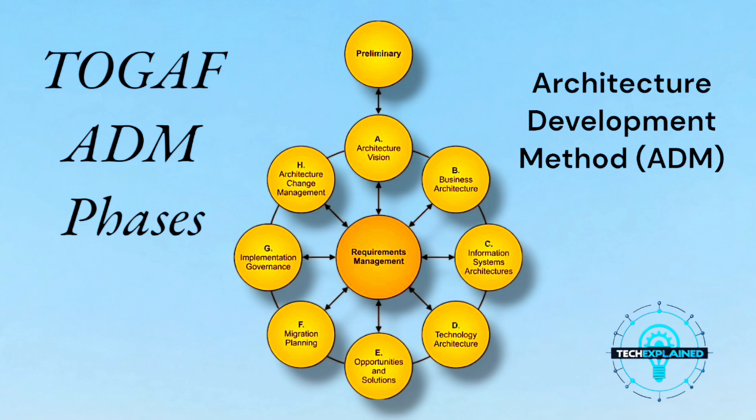Let's walk through the ADM process together. There are nine phases, all connected around a central theme: requirements management, which is like the master to-do list that keeps everything on track.